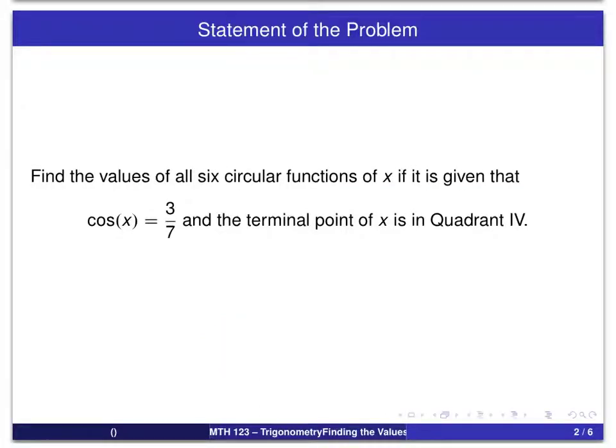So here's the point we're going to be looking at. We're going to be finding the values of all six circular functions of x if we know that cosine of x equals 3/7 and the terminal point of x is in the fourth quadrant.